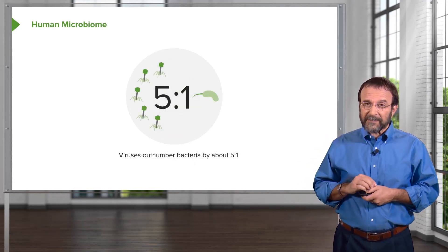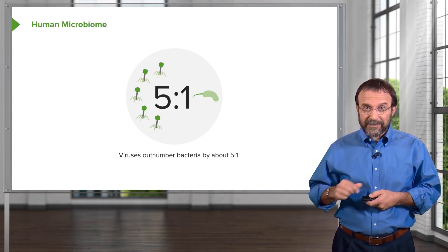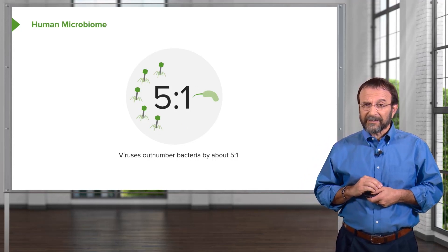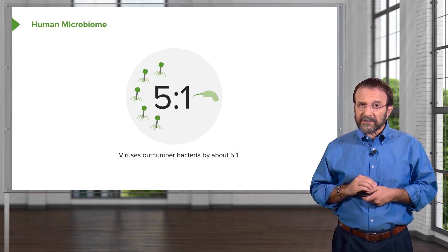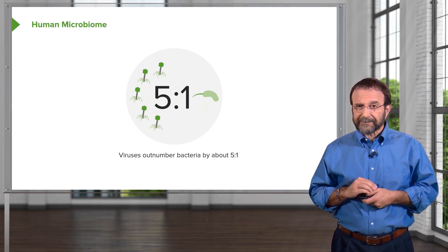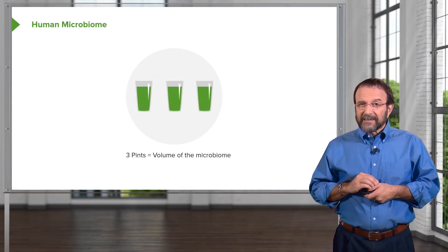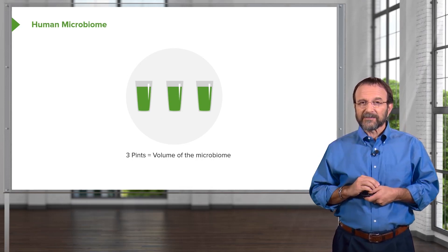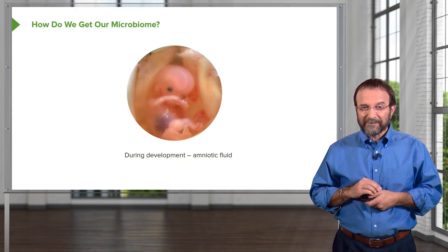And don't forget the viruses. All those bacteria and fungi and archaea in us are also accompanied by their viruses. In fact, viruses outnumber bacteria by about 5 to 1 in us, and it's quite clear that they have major roles in regulating the microbiome. The volume of the microbiome is about three pints. The next time you drink three pints of beer, remember you've just drunk the volume of your microbiome — it's my way of getting you to remember this.